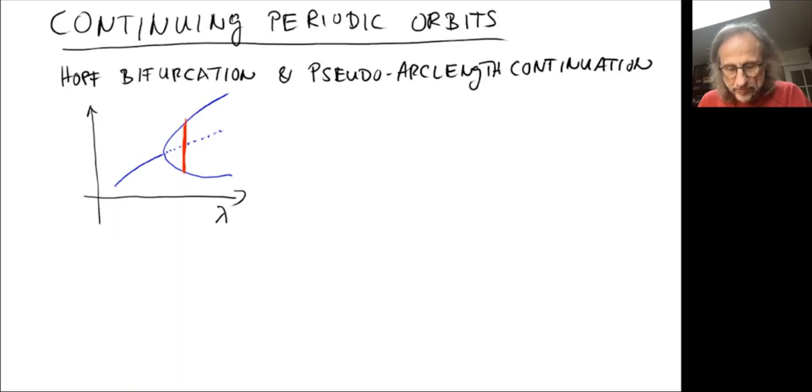But we may want to go further away from the bifurcation point to large amplitude oscillations and maybe find out what happens there. Do they undergo further bifurcations or something like that?